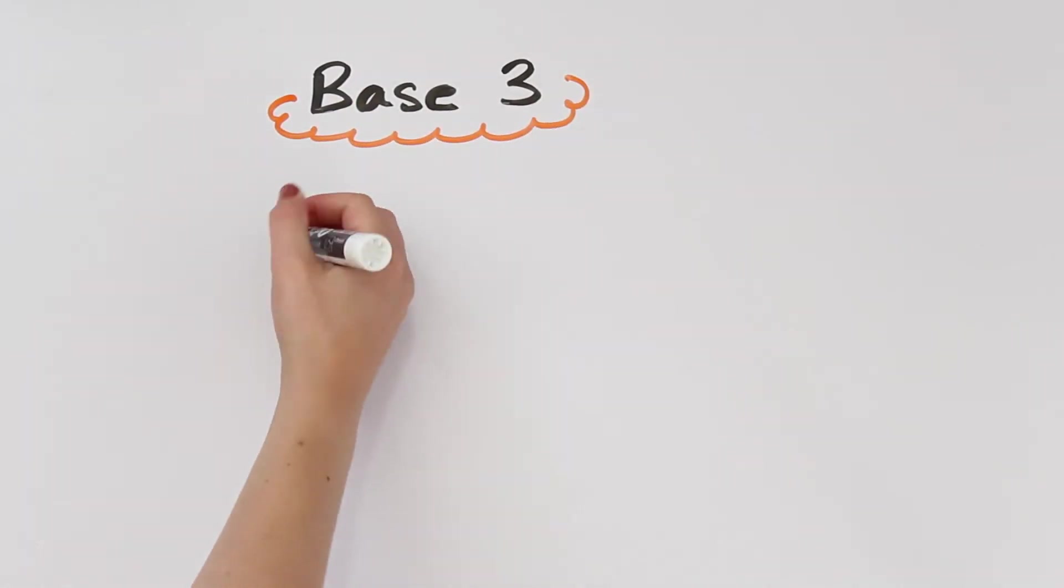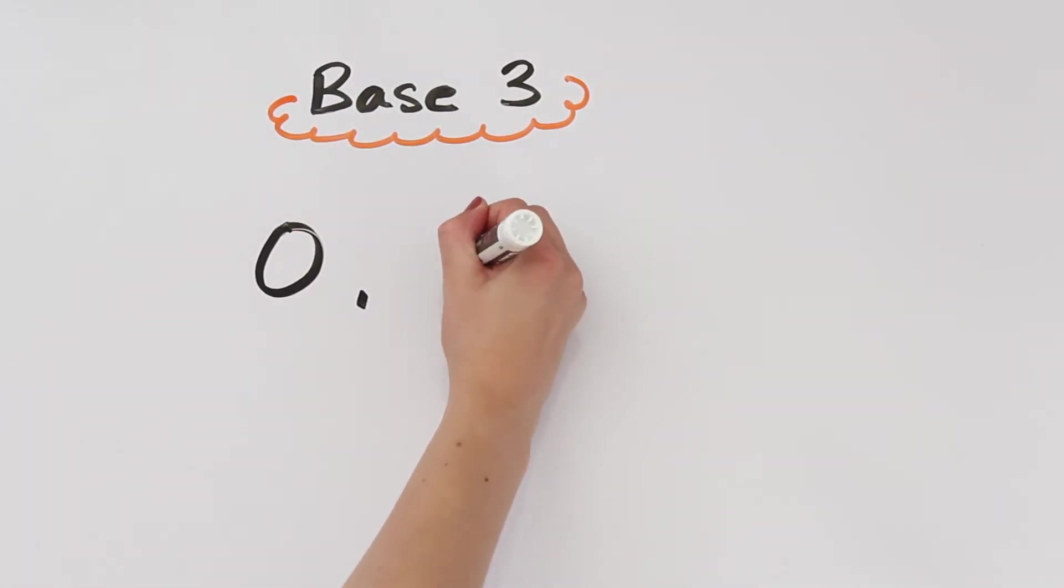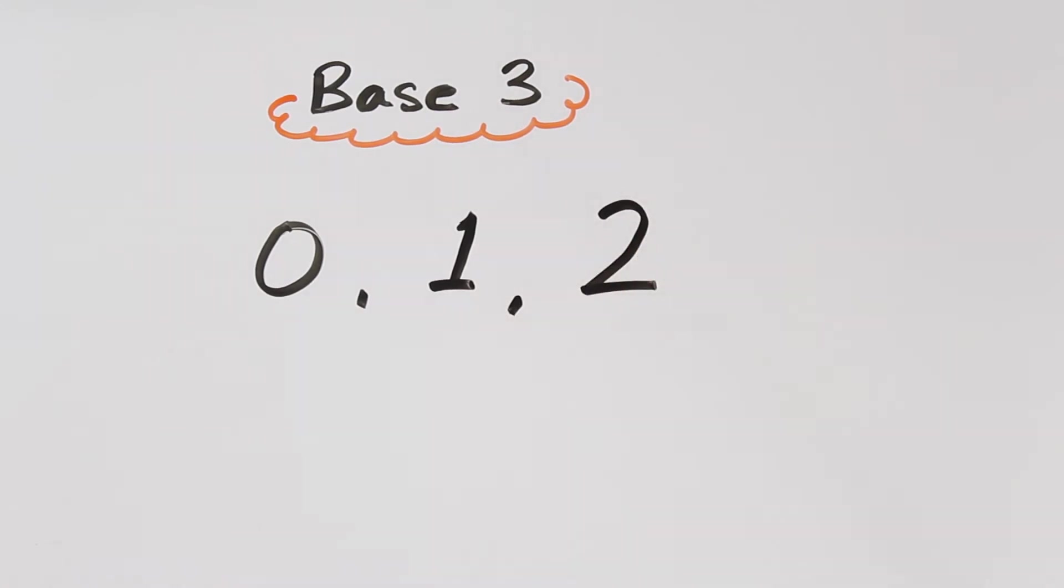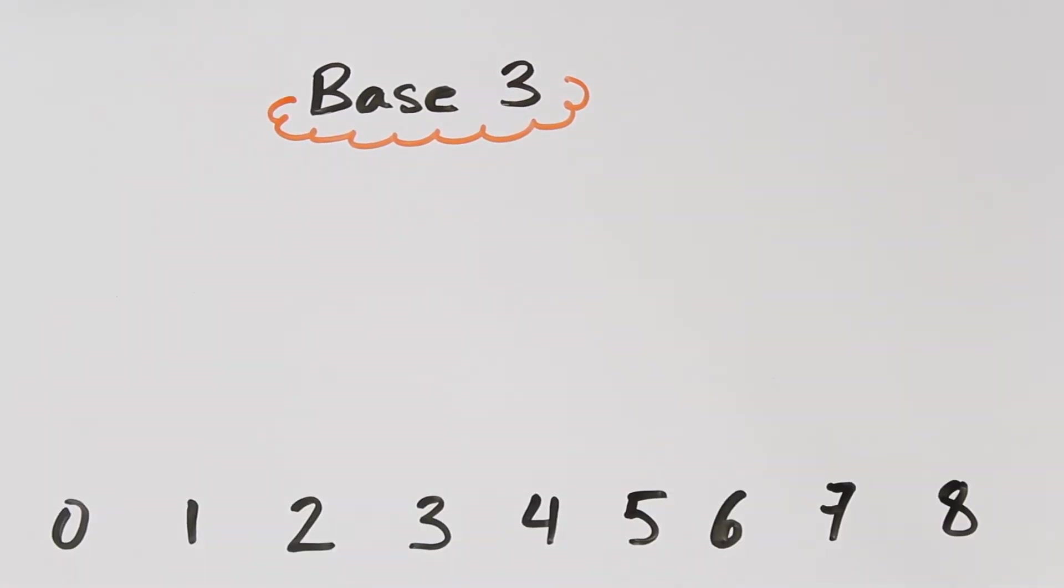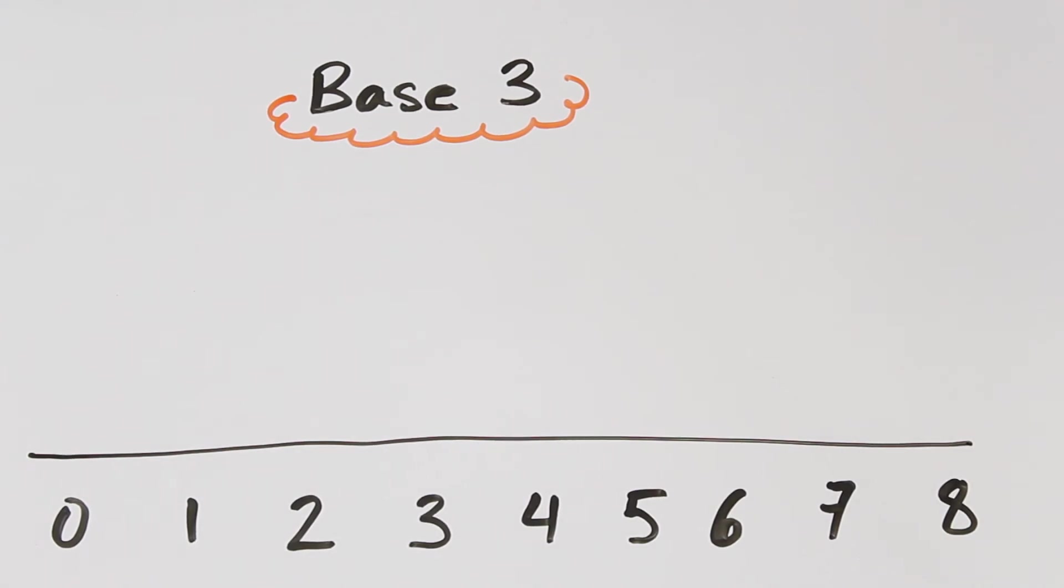In base 3, we have 3 possible digits: 0, 1, and 2. Let's start counting in base 3. I'll write the base 10 representation underneath, so you can keep track of the numbers. We have 0, 1, 2, 1, 0, 1, 1, 1, 2,